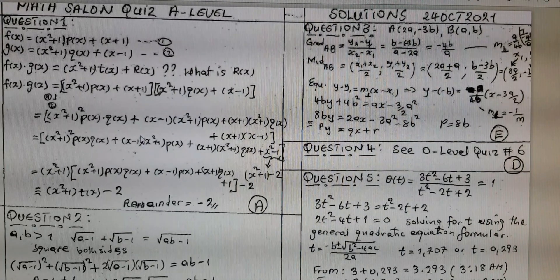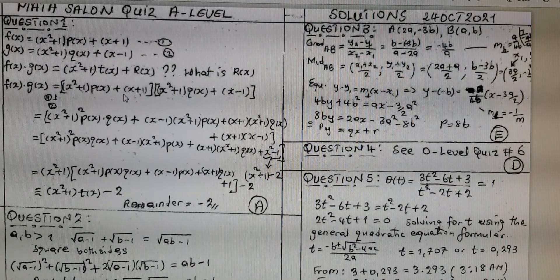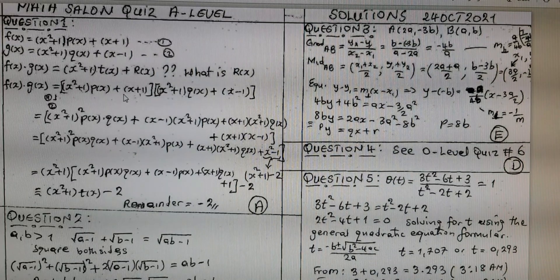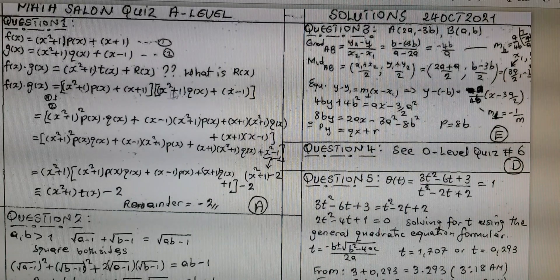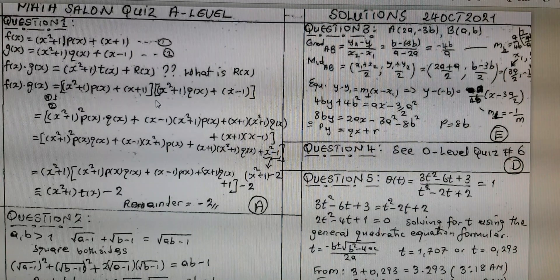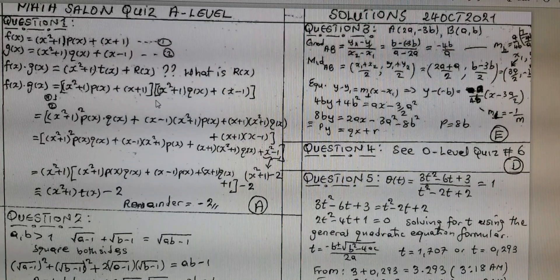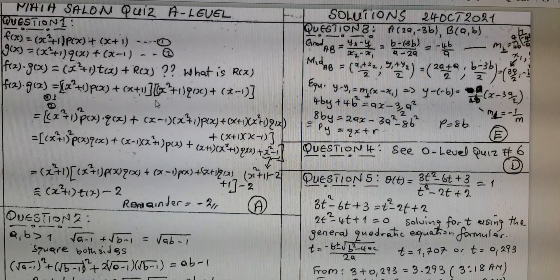Question number one was about the remainder theorem. These are ideas you already started learning from form four, form five, and lower six. Here I'm trying to expand it to functions, avoiding things that are easy, but trying to test if you understand the concepts.